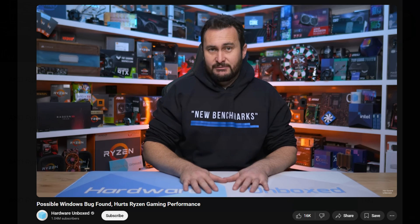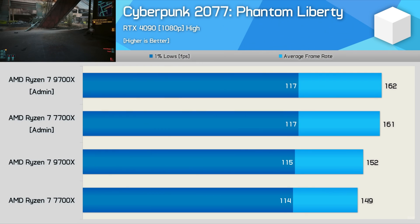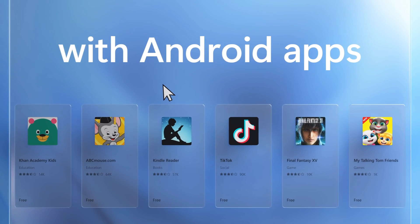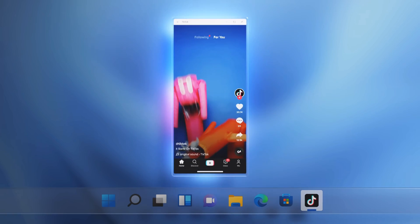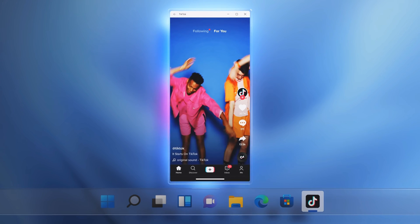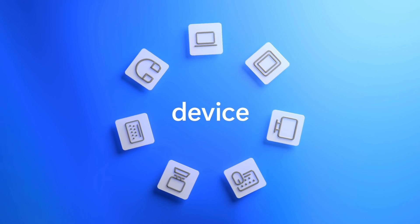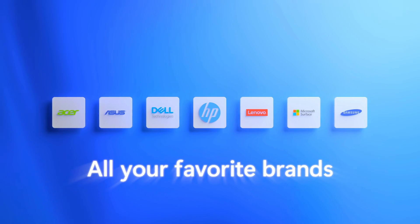Steve has made quite a few videos about this and found that using the admin account boosted the performance of AMD's Zen 4 and Zen 5 CPUs. This prompted me to run my own benchmarks — I have an Intel Core i9-13900K on my test bench — to see if Intel users can potentially experience the same uplifts. Let's discuss that in this video.